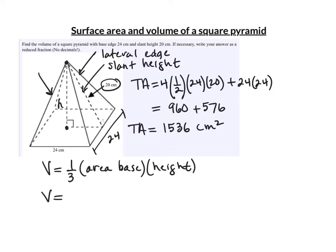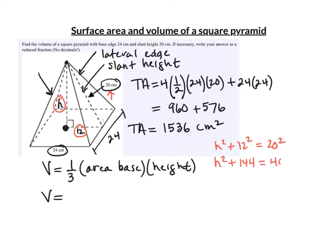To find the volume, we first need the height. Since 24 is the full base edge, the distance from the center to the midpoint of the edge is 12. Using the Pythagorean theorem: h² + 12² = 20², so h² + 144 = 400. Subtracting 144 from both sides gives h² = 256, and taking the square root gives h = 16.